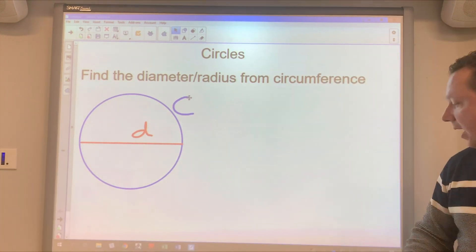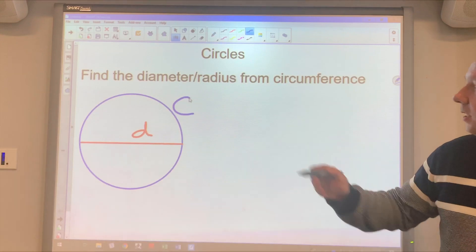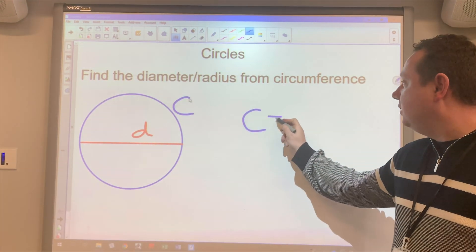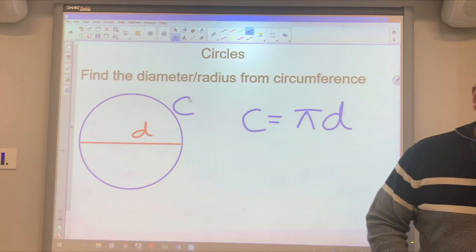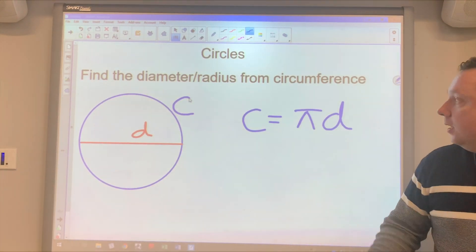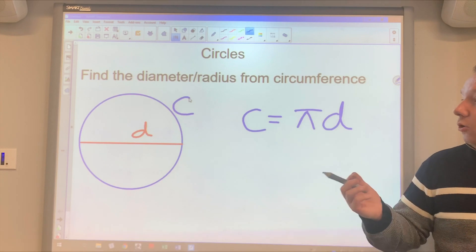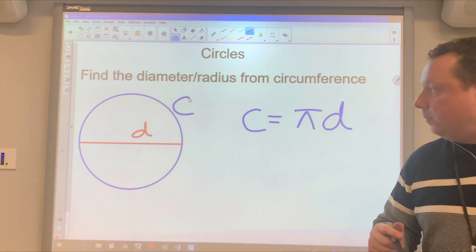Now previously we learned that there's a formula for the circumference. The circumference is pi times the diameter. So we could rearrange this equation to find the diameter. Now there's a few ways we could go about doing that. I'm going to use the simplest method.